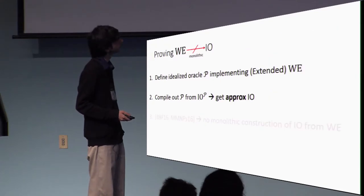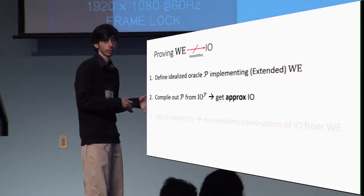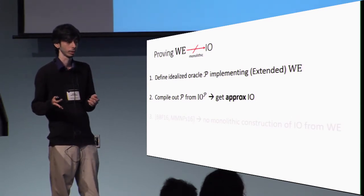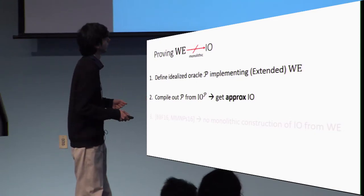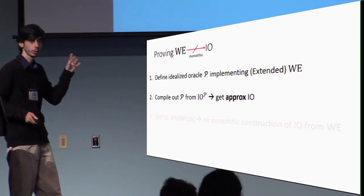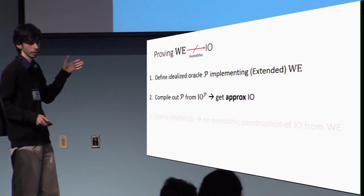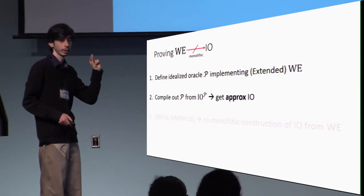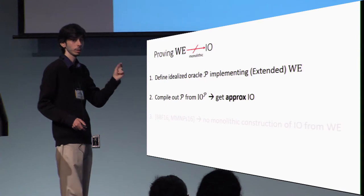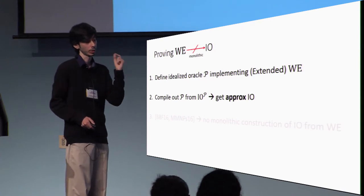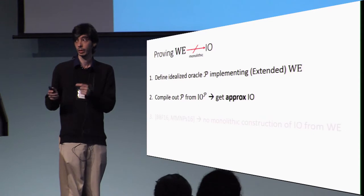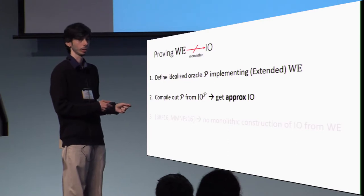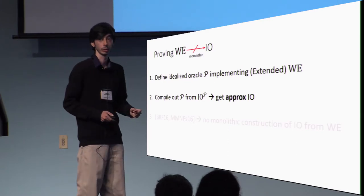We want to apply this plan to prove that monolithic constructions of I.O. from witness encryption do not exist. I'll focus on the first two steps, since this is where the main challenges of our work appear. In the first step, we need to define an idealized oracle that implements extended witness encryption, because a monolithic construction of I.O. from witness encryption is actually a fully blackbox construction of I.O. from extended witness encryption.